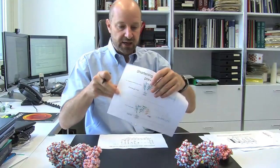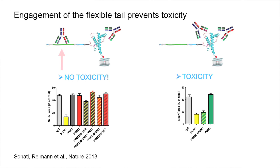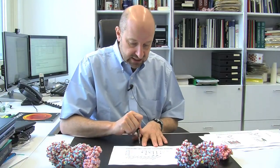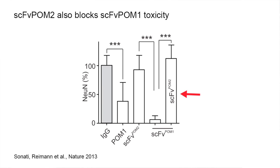If that were true, then you would expect that blocking the amino terminal with another antibody directed against those epitopes should prevent the toxicity of POM1. This experiment was done, and this is exactly what happened. If you block the amino terminal with POM2 — an antibody against the amino terminal — POM1 will still bind, but it will no longer be toxic. We also generated single-chain versions of POM2 and found the same: even the single-chain version of POM2 prevents the toxicity of the single-chain version of POM1, which is very important to prove the specificity of the phenomenon.